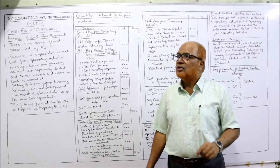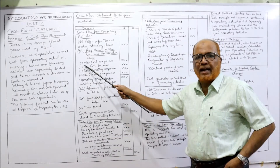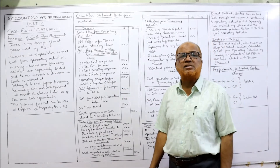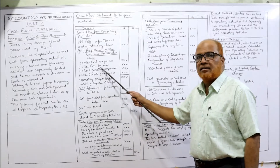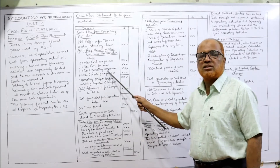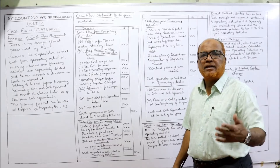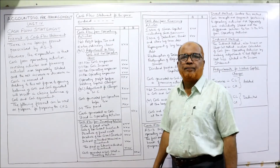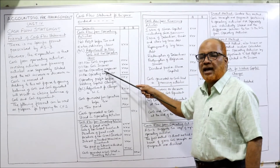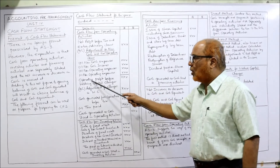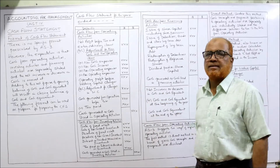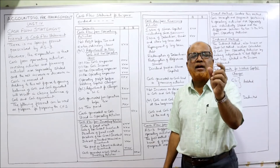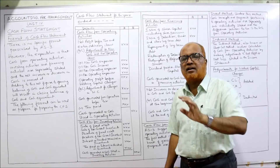Non-cash expenses such as depreciation should be added back. Non-cash income — like discount received — should be deducted. Non-operating expenses like dividend paid should be added back, and non-operating income should be deducted. After adjusting all these non-cash and non-operating items, we get operating profit before working capital changes. Working capital means current assets minus current liabilities.